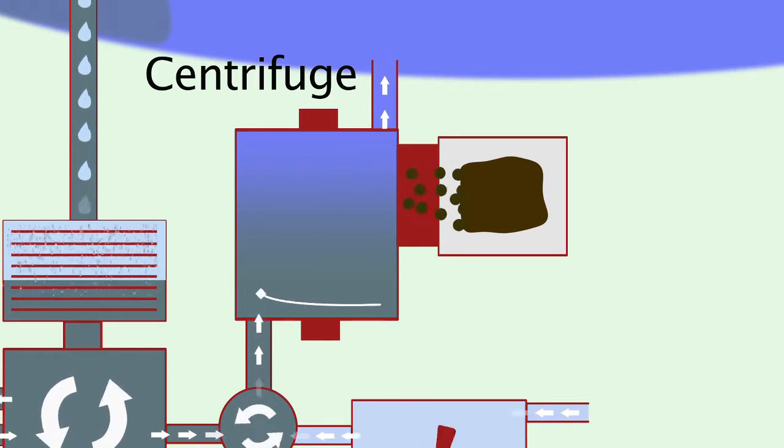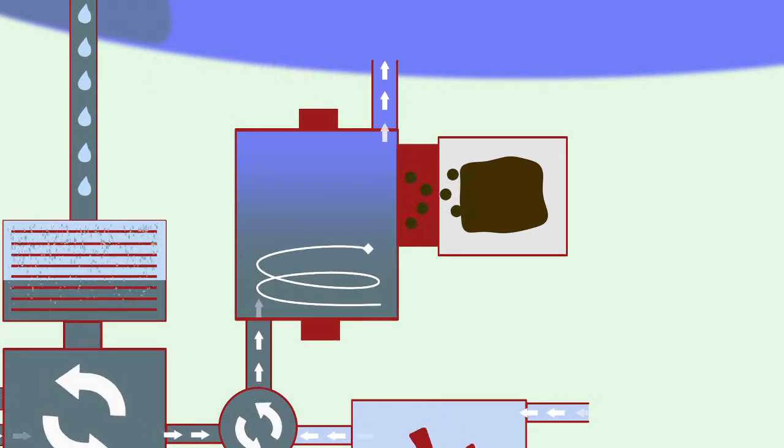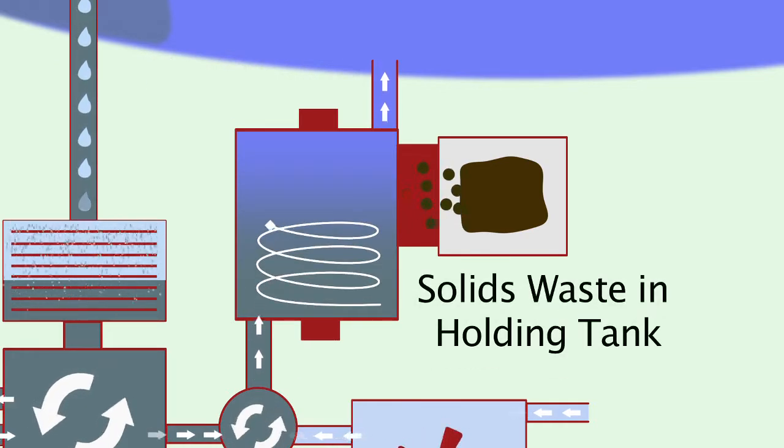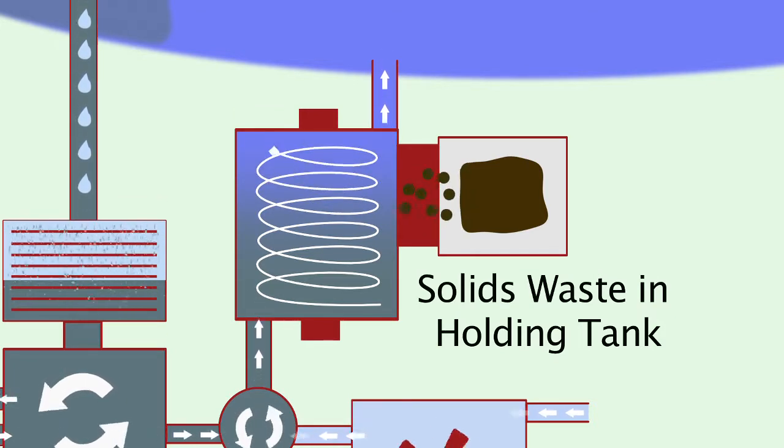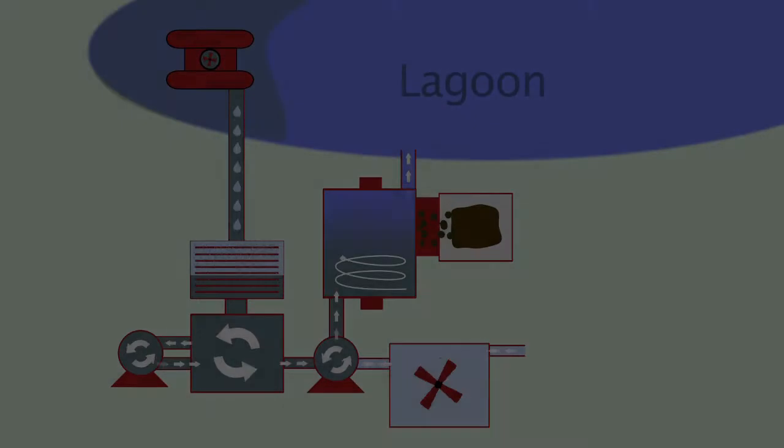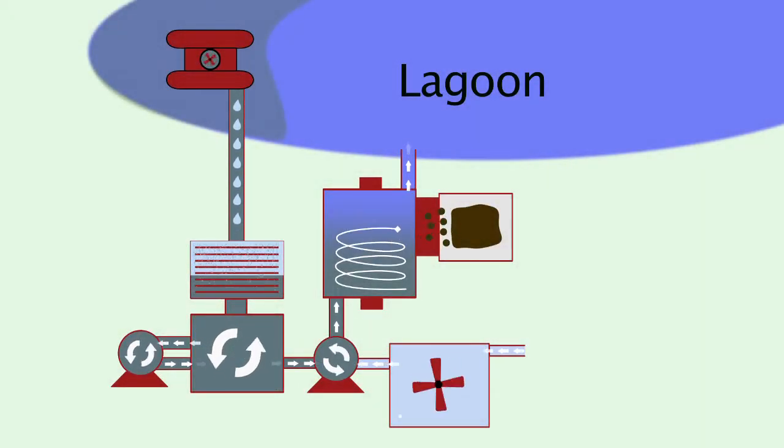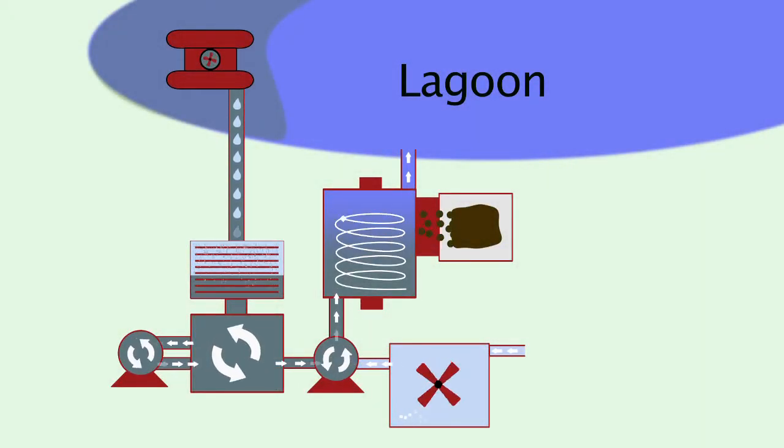The solids waste is ejected from the centrifuge, down the discharge trough, into the three-sided holding tank for easy removal, stacking and stockpiling for future usage or disposal. The reclaimed water is then fed back into the lagoon where it is available for continued usage.